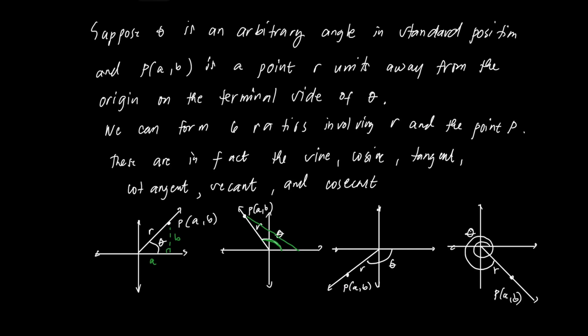We don't have a concept of finding the trigonometric ratios for an obtuse angle, but we can produce a right triangle, with side B and side A. In the third quadrant, we also produce a right triangle with side B and side A, and the hypotenuse remains R. In the fourth quadrant, the same case — we produce a right triangle with side B and side A.